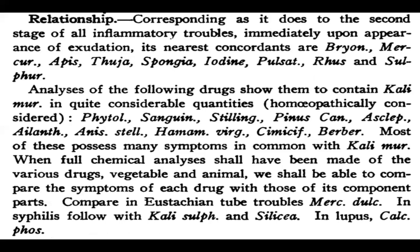Among these, Bryonia, Mercurius, Apis, and Thuja have typical discharge close to Kali Muri. Pulsatilla is also close, and Rhus Tox has similar cellulitis presentations. These are very important remedies to study in correlation with Kali Muriaticum.